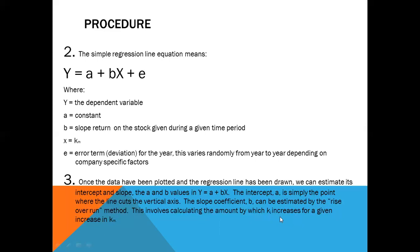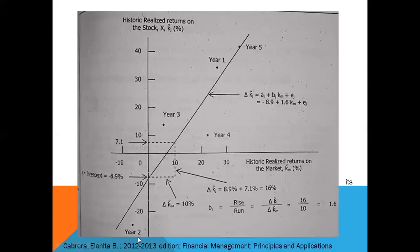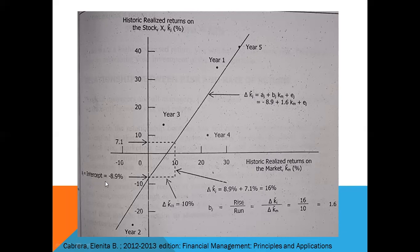So for example, we observe in this figure that the intercept a is 8.9 percent, somewhere here.